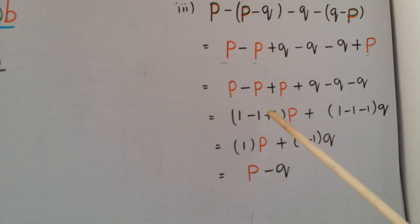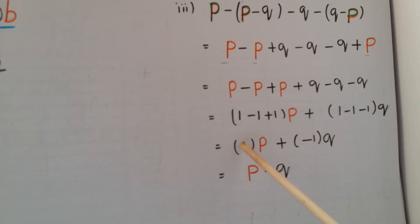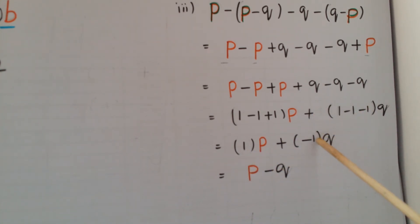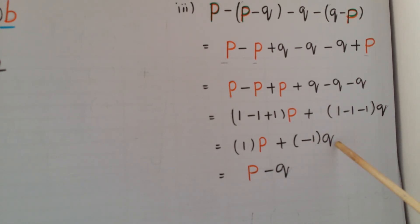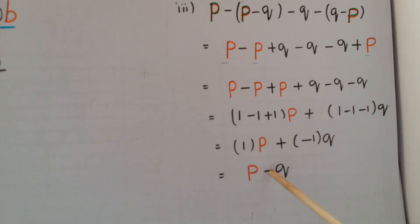You already know this calculation from the integers lesson. For p: 1 minus 1 is 0, then 0 plus 1 is 1, so 1 times p equals p. For q: 1 minus 1 is 0, then 0 minus 1 is minus 1, so minus 1 times q equals minus q. Therefore the final answer is p minus q.